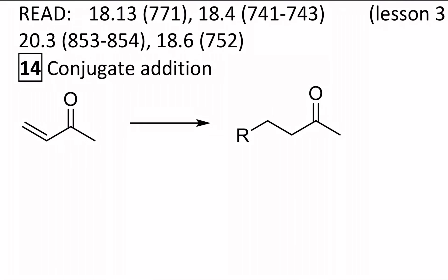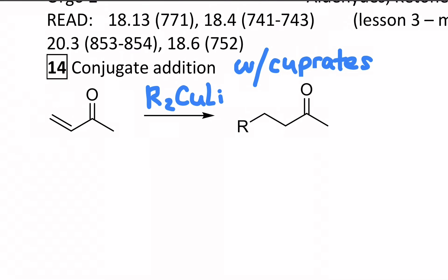The first one is called a conjugate addition, and I want you to add to your notes it's actually with cuprates. These are organometallic reagents we learned about in orgo one. They're a nucleophilic hydrocarbon attached to copper, written like so - it's actually a copper anion. You might remember from orgo one that cuprates do not react with aldehydes and ketones, as opposed to Grignards and lithiates which do.